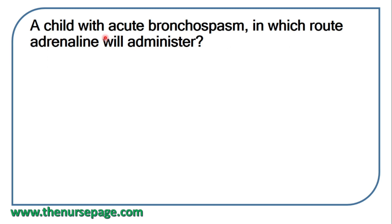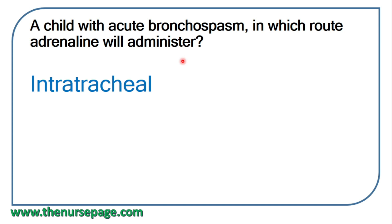Next question: a child with acute bronchospasm — by which route will adrenaline be administered? The correct answer from the options is intratracheal. For a patient with bronchospasm, which is an emergency, intratracheal administration gives the fastest action. Other options such as intramuscular and subcutaneous are not used in this acute situation.